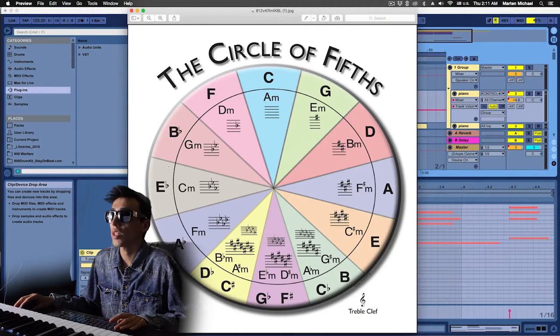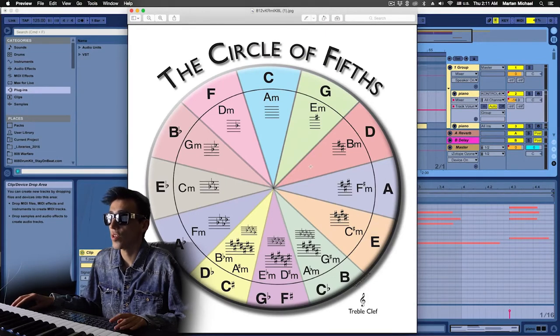Now on the outside ring you have all the major chords. So this is C major, G major, D major, A major, E major, so on and so forth.